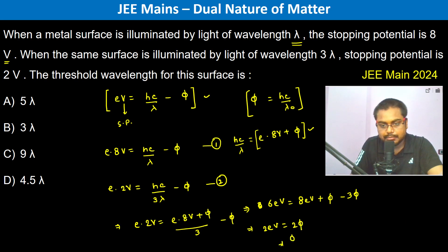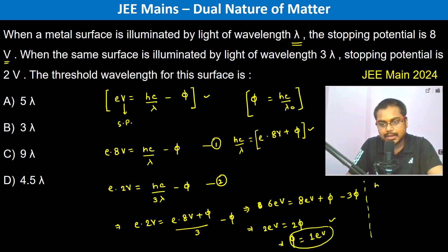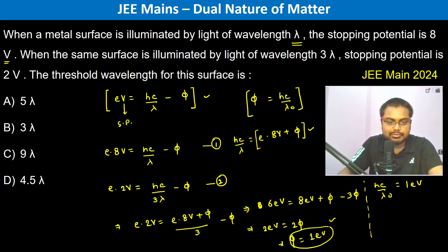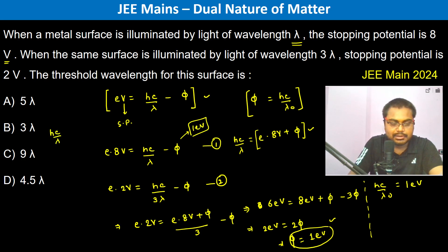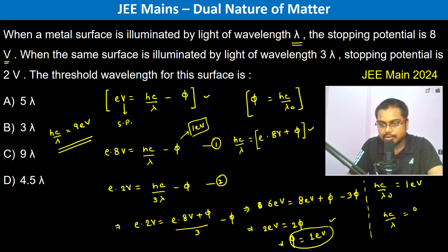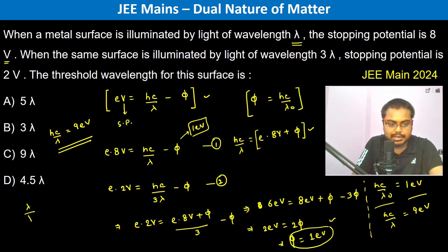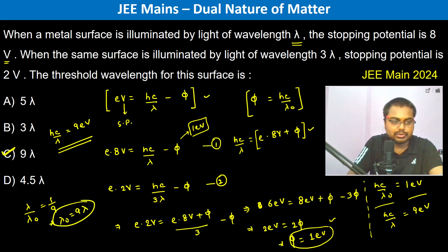So we have 2 electron volts equals 2 phi, therefore phi equals 1 electron volt. Since hc by lambda naught equals phi equals 1 electron volt, and hc by lambda equals 9 electron volts from the first equation, dividing gives lambda by lambda naught equals 1 by 9. Therefore lambda naught equals 9 lambda, so the answer is option C.